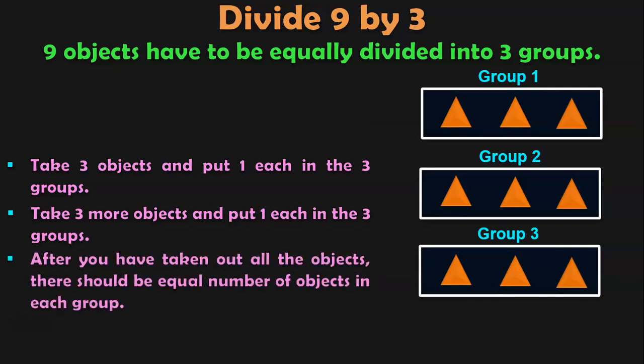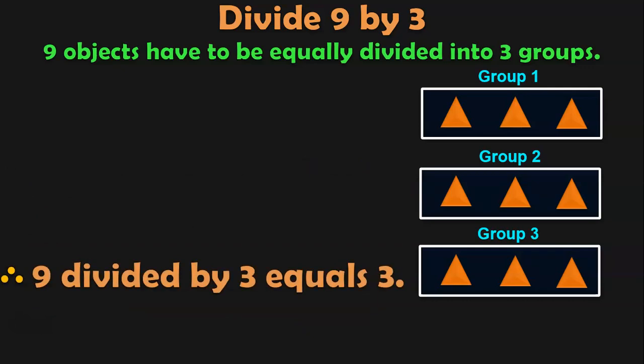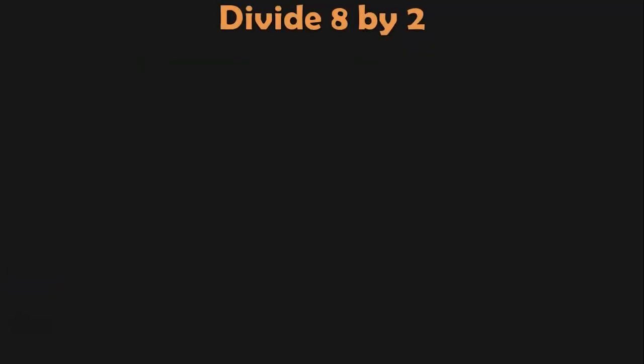After you have taken out all the objects, there should be equal number of objects in each group. We have 3 objects in each group, which means that 9 divided by 3 equals 3. That is 9 objects when equally divided into 3 groups, each group has 3 objects. The next sum is divide 8 by 2.